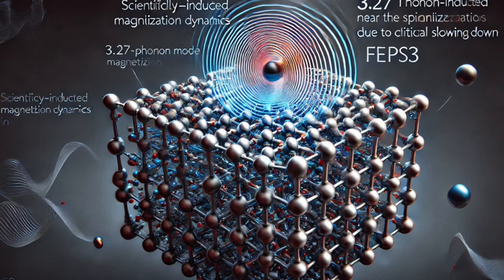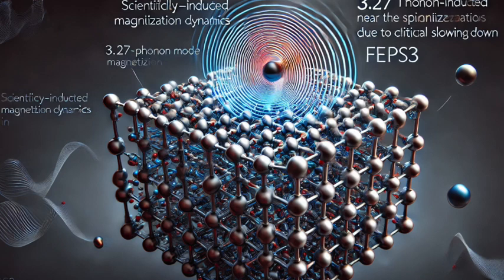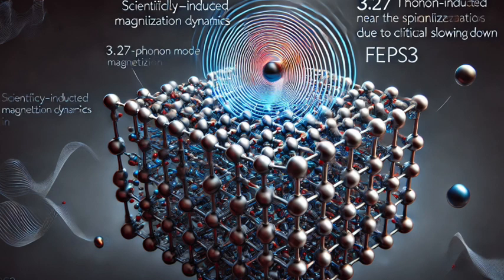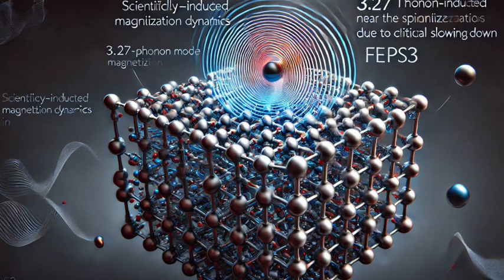So they measure how much the light is twisted after it passes through the material, and that tells them how strong the magnetization is. Clever. Right. But they're not just measuring the strength of the magnetism, right? They're also looking at how it changes over time. Right, and that's the time-resolved part of the technique. They're using ultra-fast laser pulses, which allows them to take snapshots of the magnetization at incredibly short intervals.